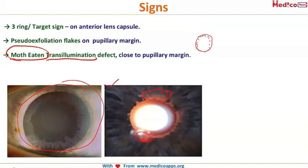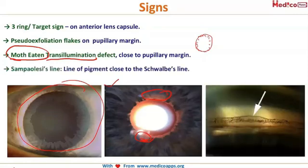The moth-eaten trans-illumination defect is close to the pupillary margin, whereas the radial trans-illumination in pigmentary glaucoma was away from the margin. Another important sign — likely an exam question — is the Sampaolesi sign: a line of pigment close to Schwalbe's line, indicated by the arrow.